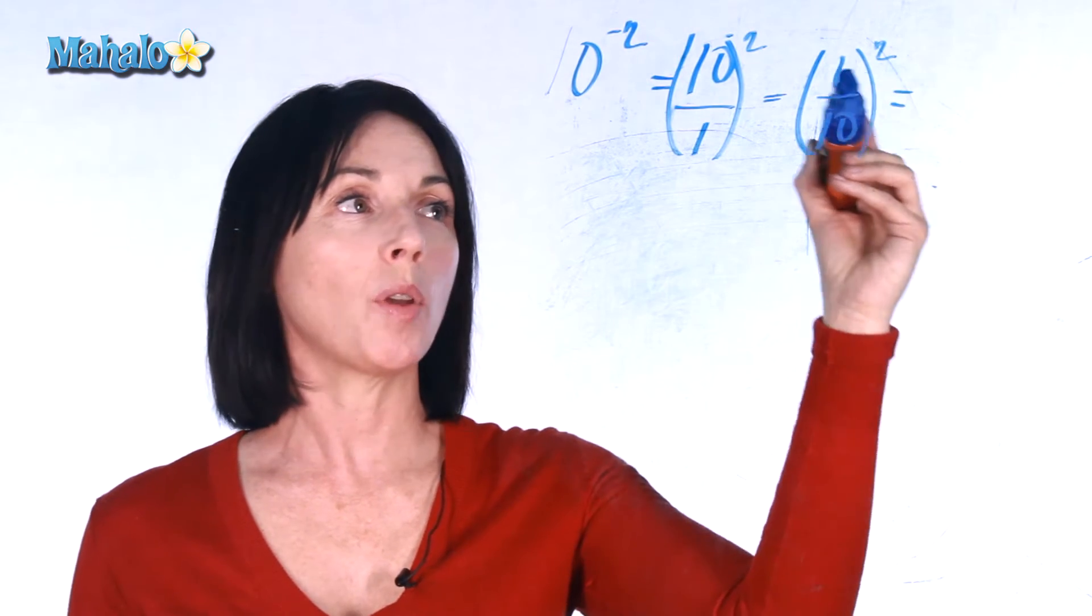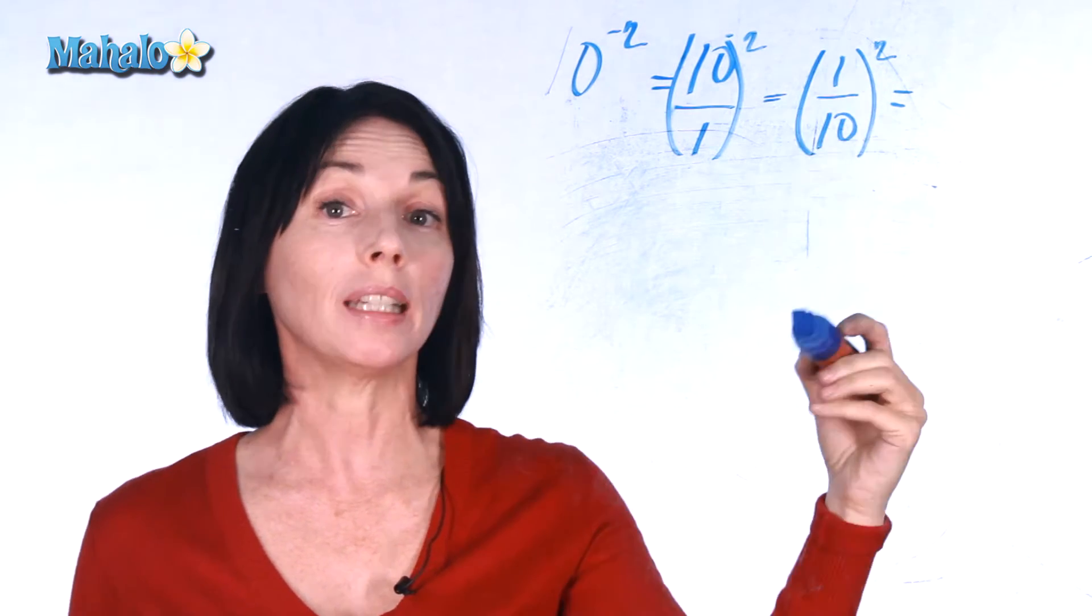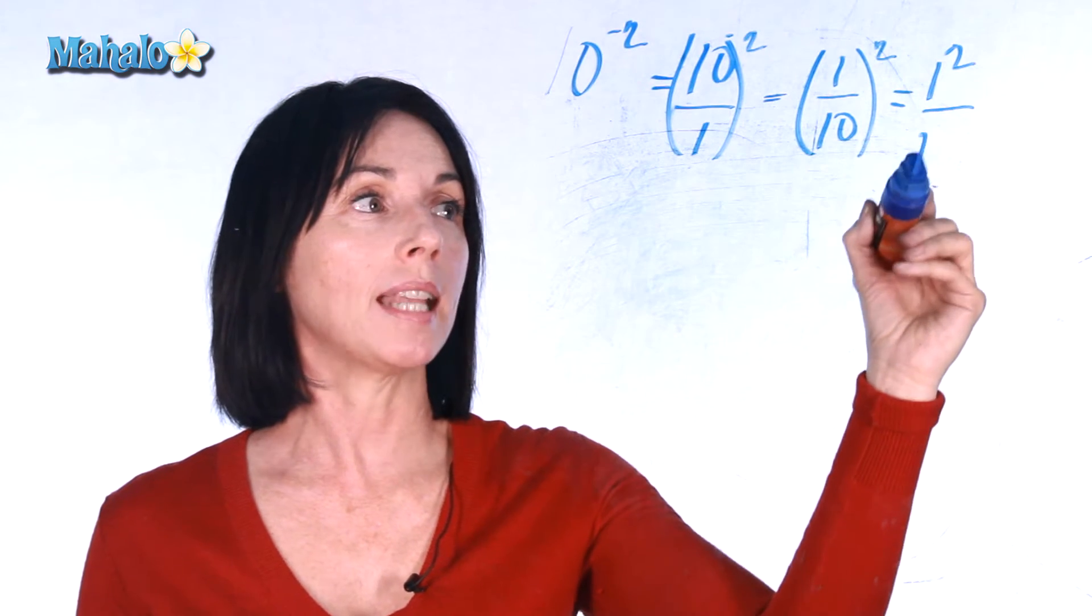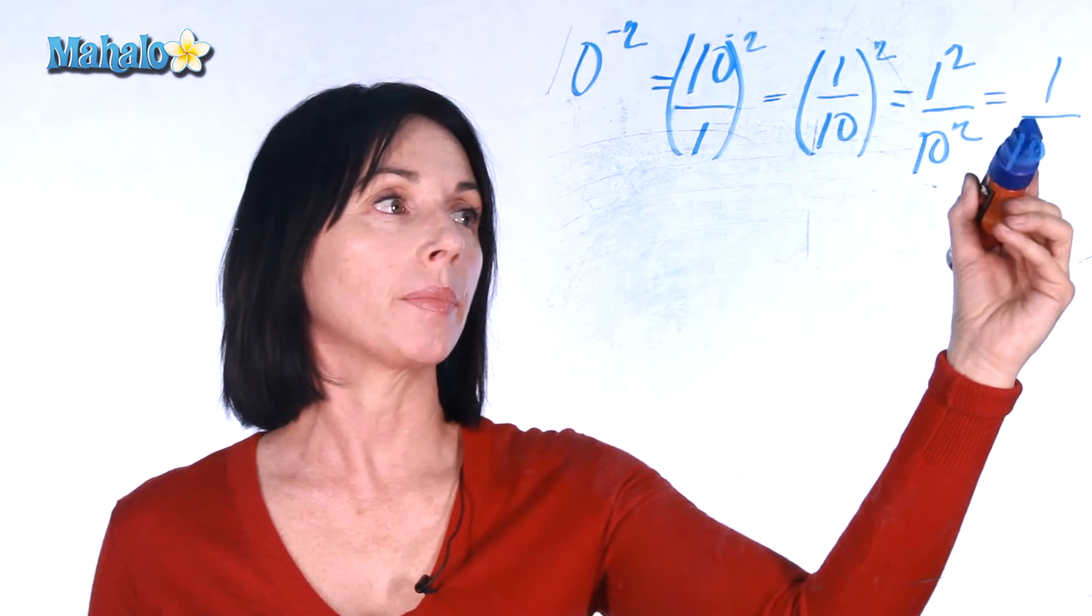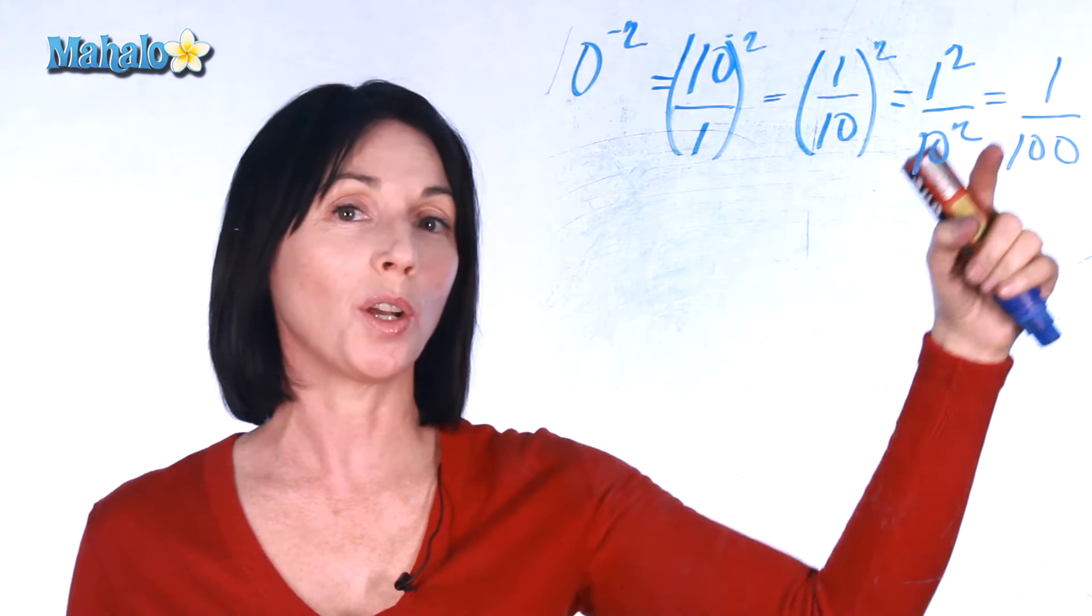Now any time you have a fraction like this and you're raising it to a power, you can raise each part of the fraction individually. So this is the same as 1 squared over 10 squared. 1 squared is just 1 and 10 squared is 100. So 10 to the power of negative 2 is actually equal to 1 over 100.